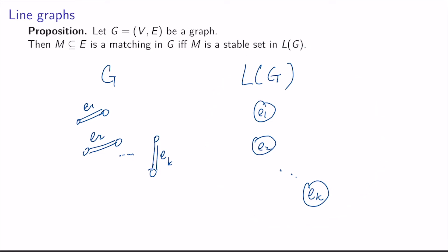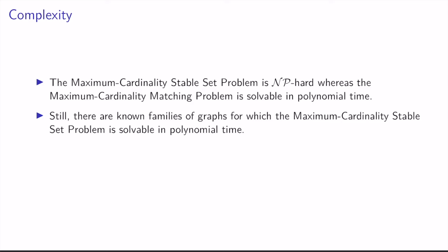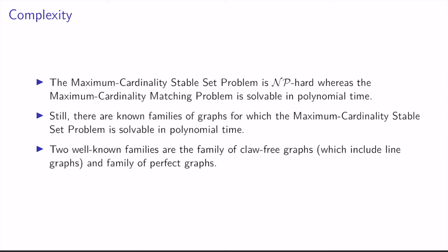This explains why the maximum cardinality stable set problem generalizes the maximum cardinality matching problem. The bad news is the maximum cardinality stable set problem is NP-hard — there's currently no known polynomial time algorithm for solving this problem. But there is a polynomial time algorithm for maximum cardinality matching. Still, it is possible to solve the maximum cardinality stable set problem in polynomial time for certain families of graphs, including the family of claw-free graphs, which include line graphs, and the family of perfect graphs.